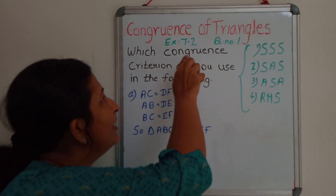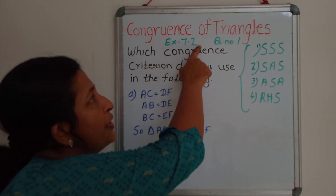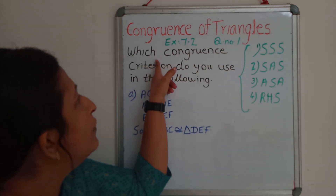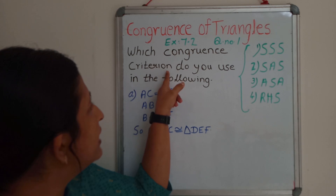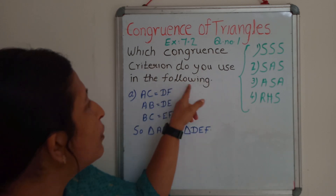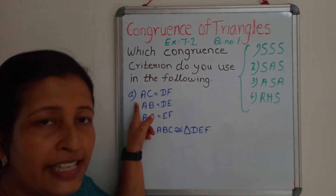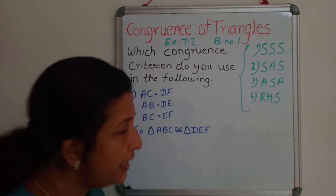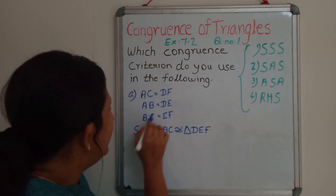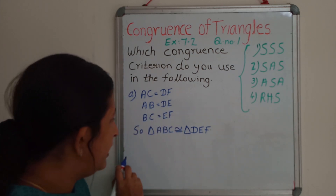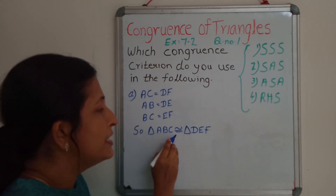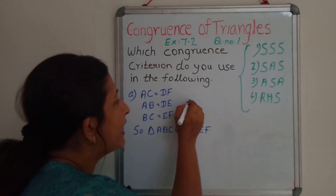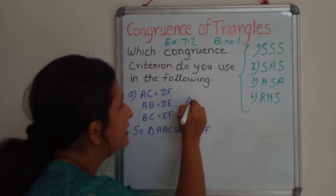Today we will discuss Exercise 7.2 Question number 1. The first question says: which congruence criterion do you use in the following? They have given data like this: AC equal to DF, AB equal to DE, BC equal to EF. So triangle ABC is congruent to triangle DEF, and they have given two triangles.